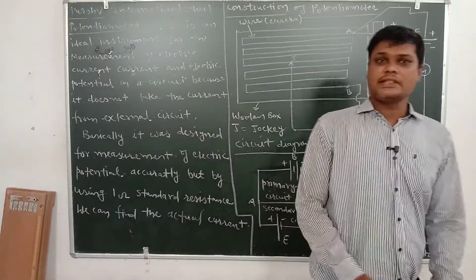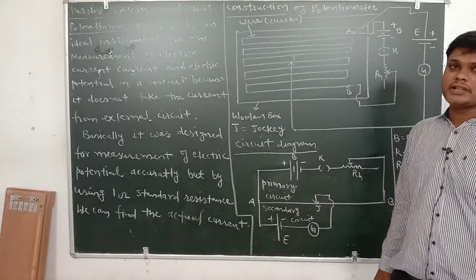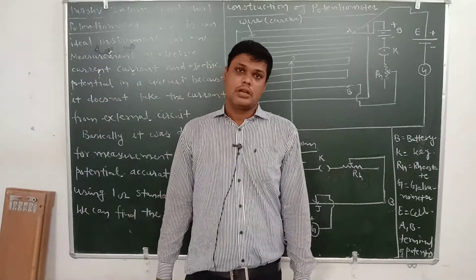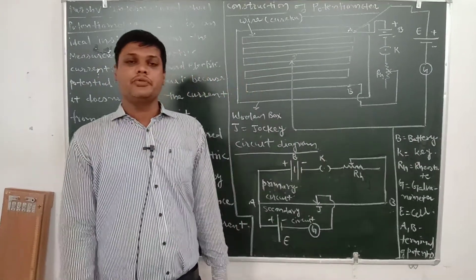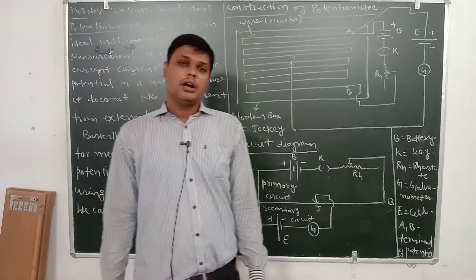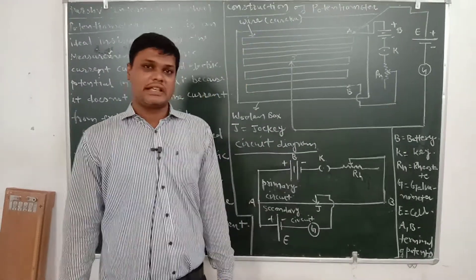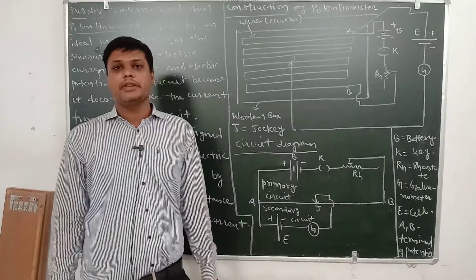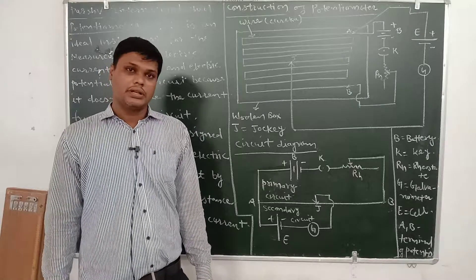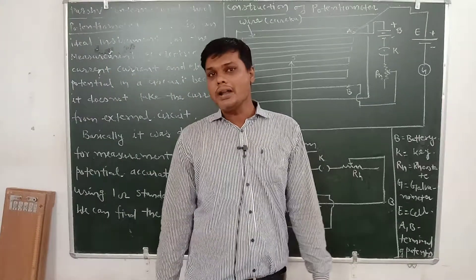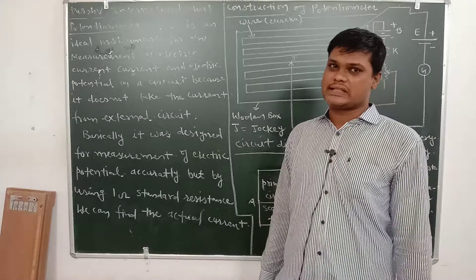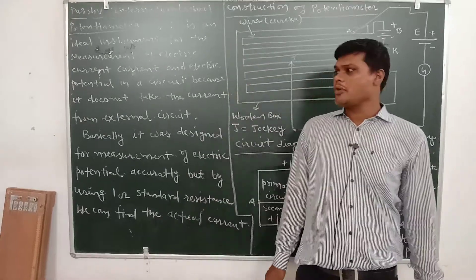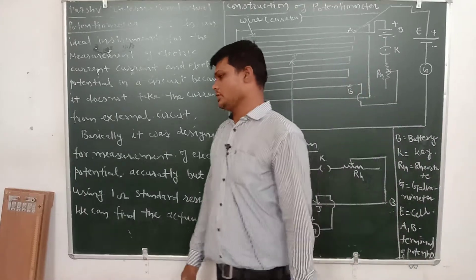Good morning to all students. Welcome to Parts For International School. In our last class we discussed about the meter bridge. When we use the meter bridge in practical to find the unknown resistance, S is equal to (100 minus l) upon l into capital R, where capital R is the resistance introduced from the resistance box and l is the balance length. Today we discuss about the potentiometer.